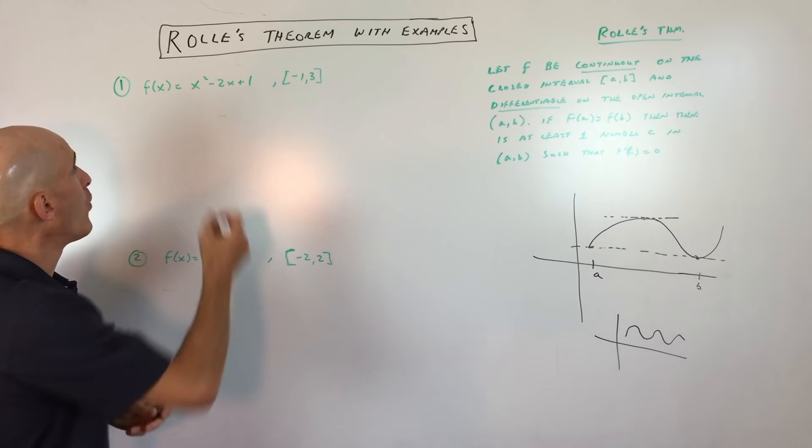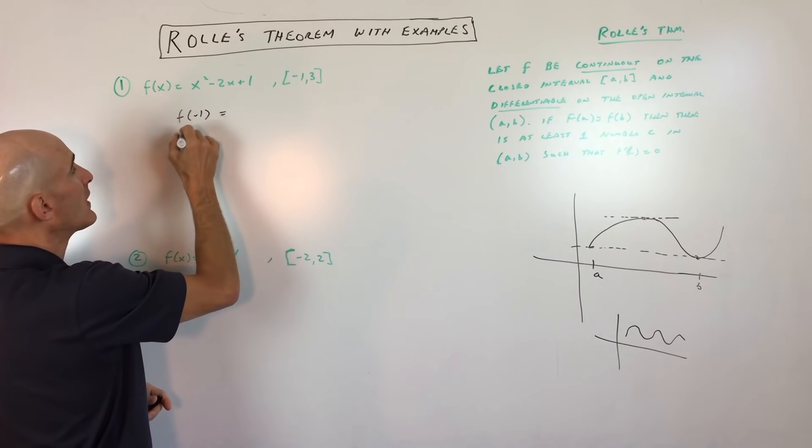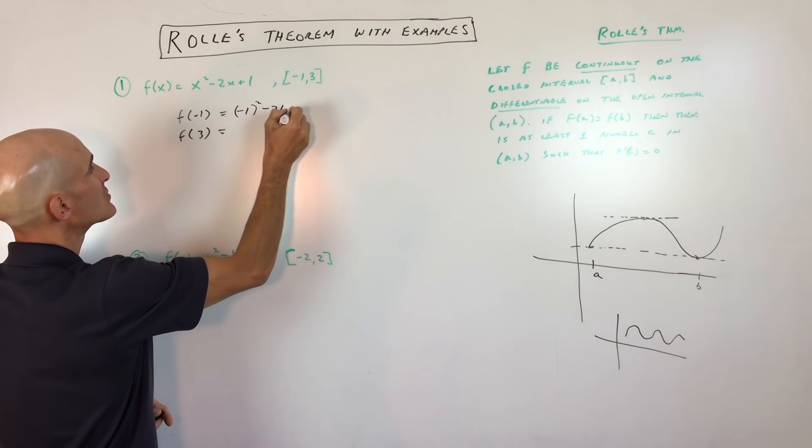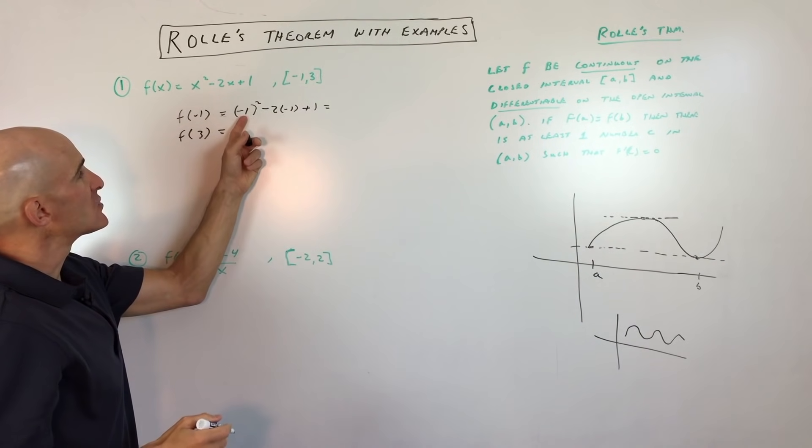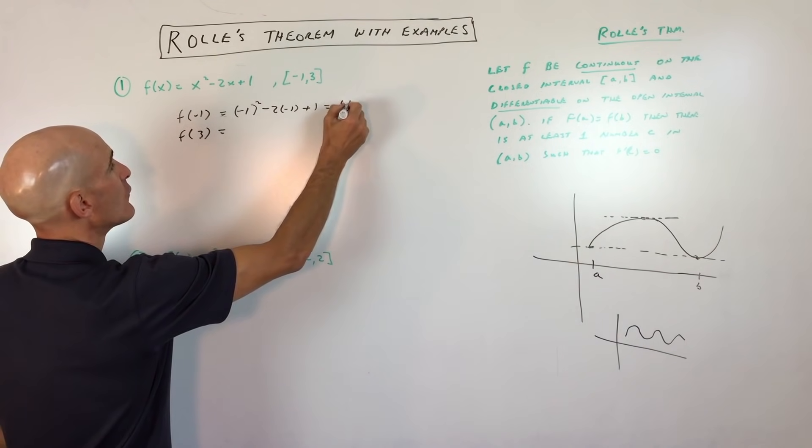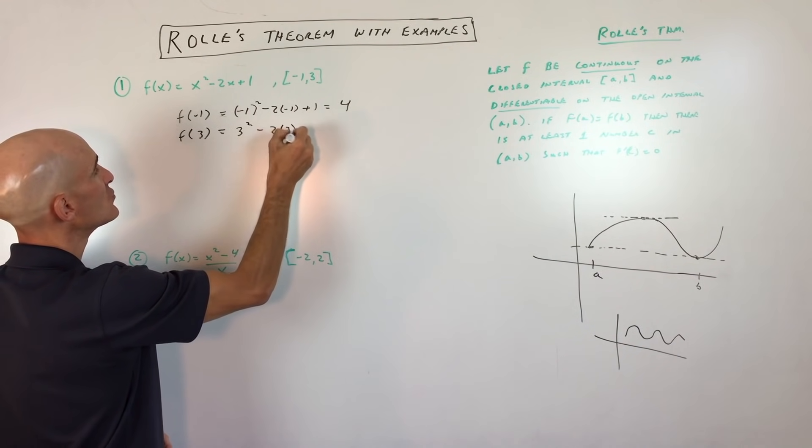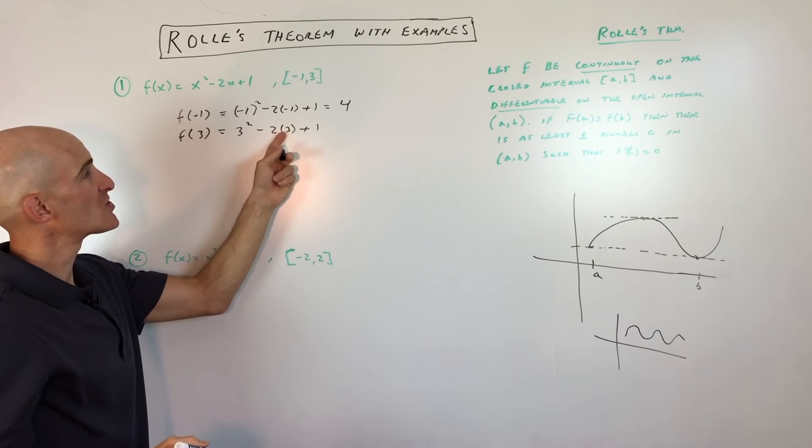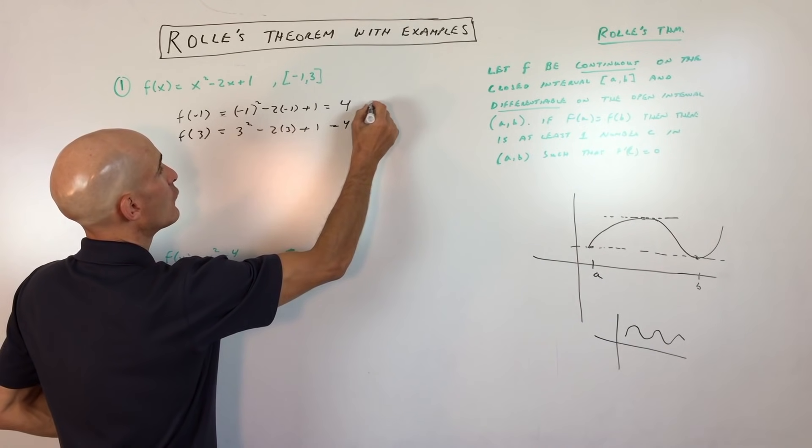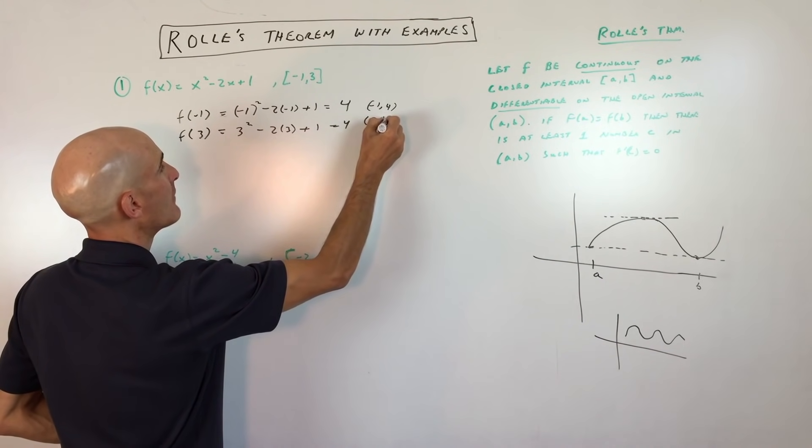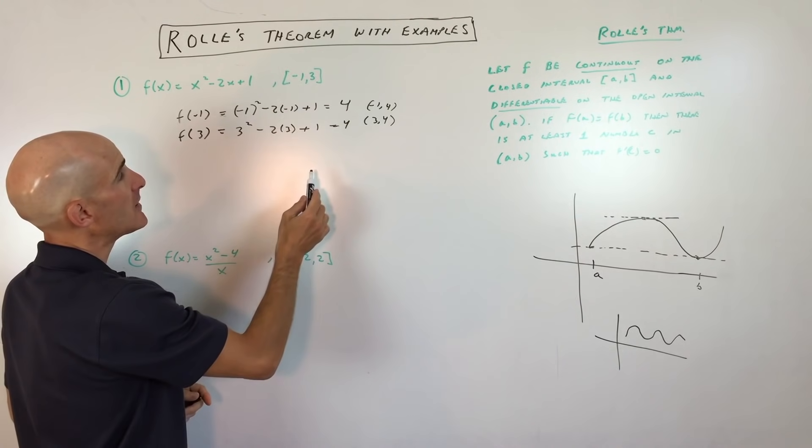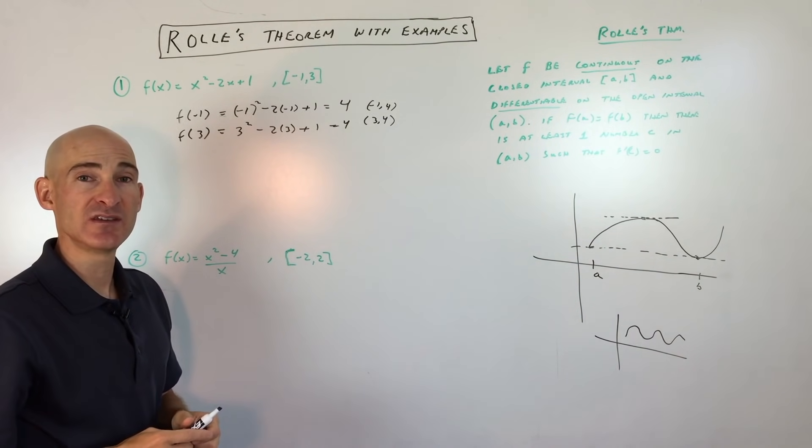The next thing that we want to test is what does the value of f of negative 1 equal and what does the value of f of 3 equal? Well, you can see if we put negative 1 in for x, we get negative 1 squared minus 2 times negative 1 plus 1. This is 1 plus 2 plus 1, which is 4. And if we put 3 in, what do we get? 3 squared minus 2 times 3 plus 1. That's 9 minus 6, which is 3, plus 1 equals 4. So what you can see is we have negative 1 comma 4 and we have 3 comma 4. And you can see that they have the same y value. So what that means is that somewhere in between negative 1 and 3, the slope of the tangent line must be equal to 0.